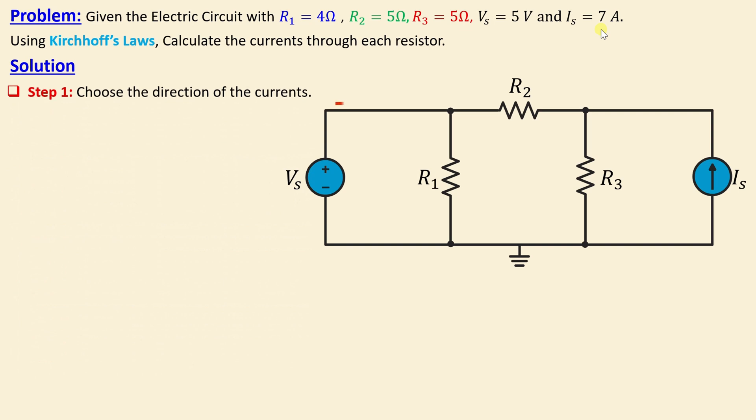Let's choose I2 the current through the resistor R2, let's choose the current I1 is the current through the resistor R1 and I3 is the current through the resistor R3. After we choose the direction of the current,